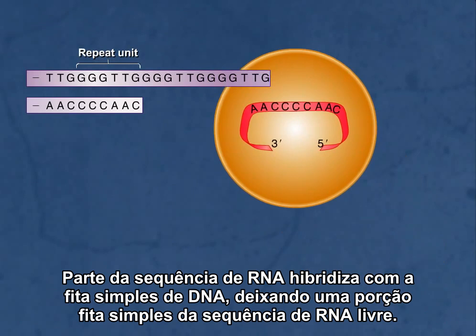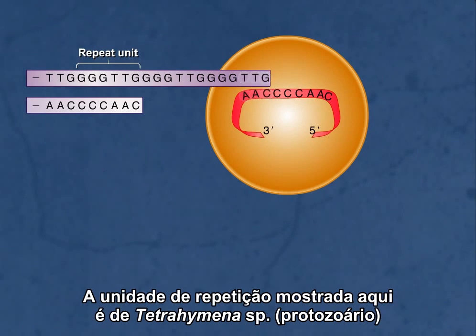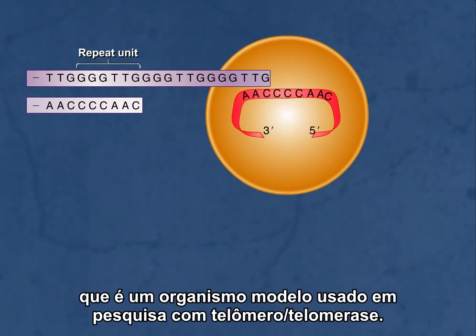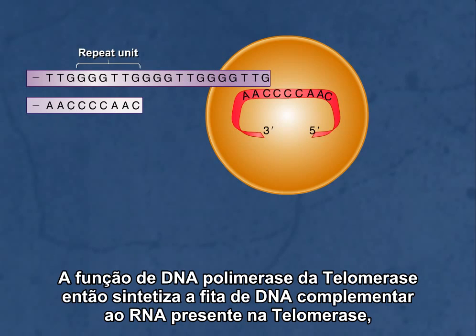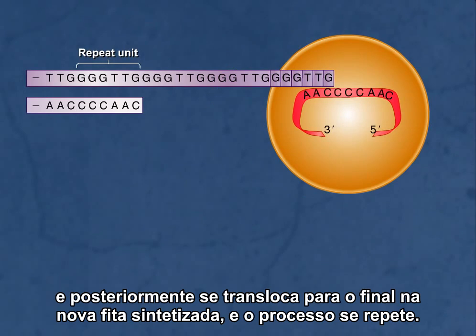Part of the RNA sequence hybridizes with the single-stranded overhang on the DNA strand, leaving a single-stranded overhanging RNA sequence. The repeat unit shown here is from Tetrahymena, which is a model organism used in telomere and telomerase research. The DNA polymerase function of telomerase then synthesizes the DNA strand complementary to the RNA found in telomerase and subsequently translocates to the end of the newly synthesized strand, and the process repeats itself.